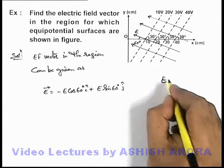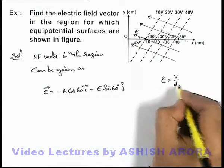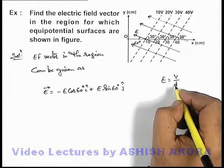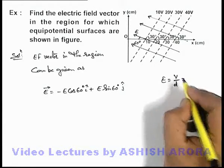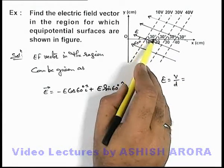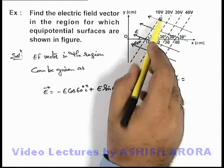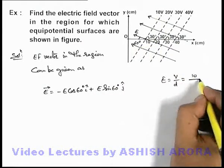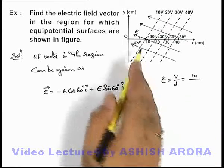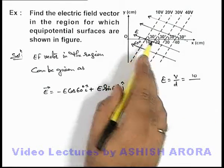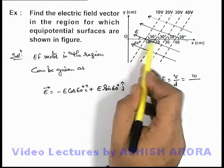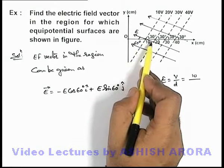The magnitude of electric field we can simply write as potential difference divided by the separation between the equipotential surfaces. So here we can see the potential difference between two nearby equipotential surfaces is 10 volts, divided by the separation between two equipotential surfaces. If this is 10 centimeter, then in this situation...